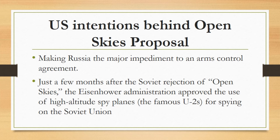Indeed, Open Skies was much less than an espionage plot. Eisenhower himself was later quoted as saying that he knew the Soviets would never accept the plan, but thought that their rejection would make the Russians look like they were the major impediment to an arms control agreement. For the Soviets, the idea of US planes conducting surveillance of their military bases was unthinkable — they did not want it known that the Soviet Union was far behind the United States in terms of its military capabilities.